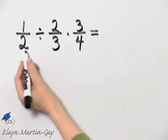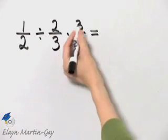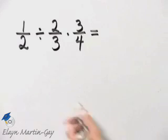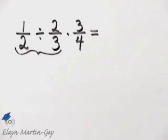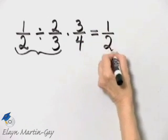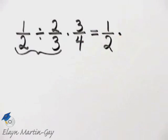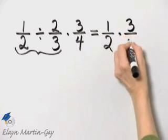So I will perform one-half divided by two-thirds first, then I'll multiply that by three-fourths. Concentrating on these two fractions and that operation, it becomes one-half times the reciprocal of two-thirds, which is three over two.